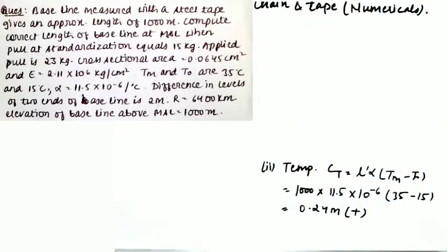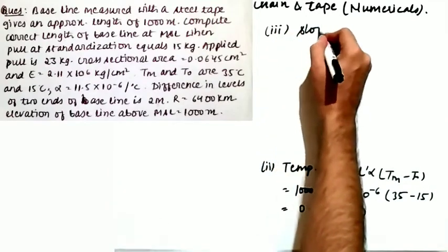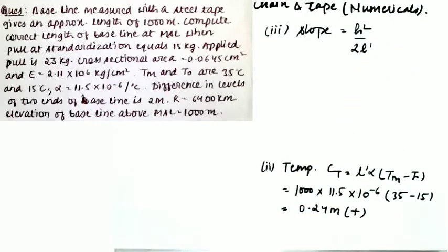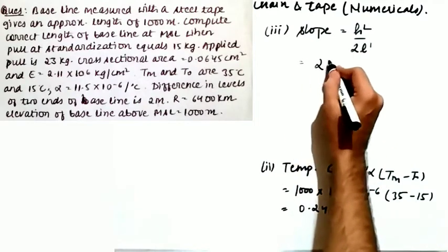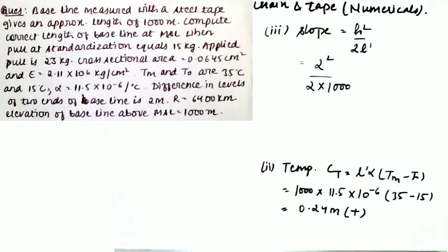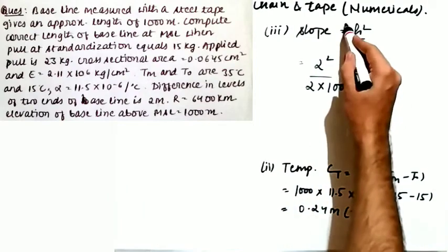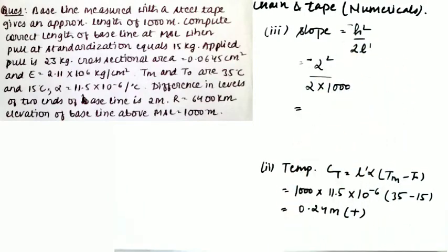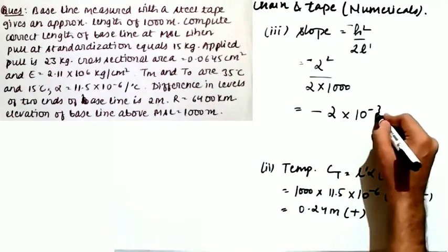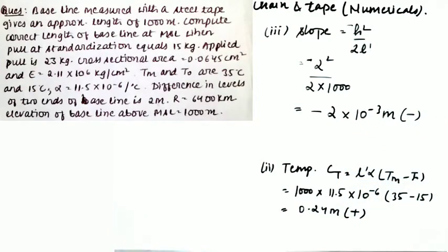Now applying the slope correction. Since the angle θ is not given, use the formula H² / (2L'). H = 2 meters, L' = 1000. So: 2² / (2 × 1000) = 4 / 2000. This correction is always negative. It comes out to −2 × 10⁻³ meters. Do not forget the negative sign.